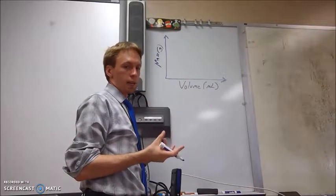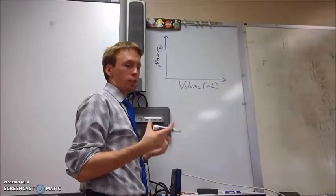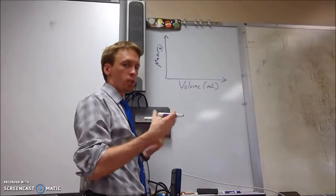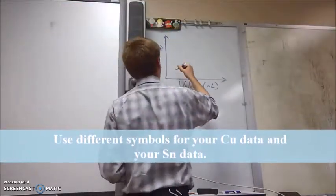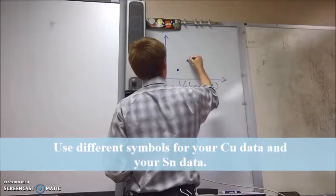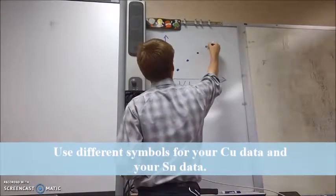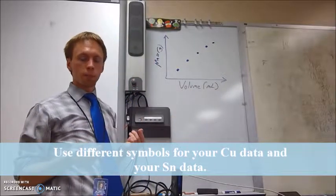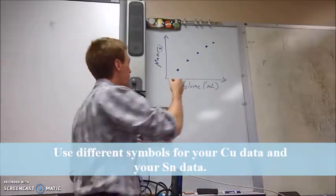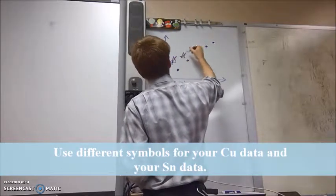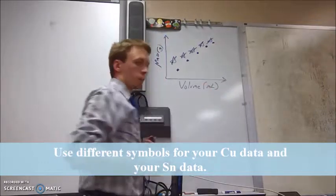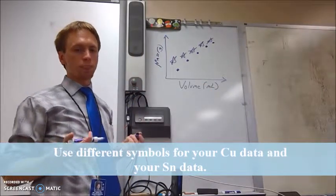Because you have two different sets of data, you want to make sure that your data points look different for each of the two metals you used so that you don't confuse your data points. So those are an example of data points for copper. And for example, those are my data points for tin.